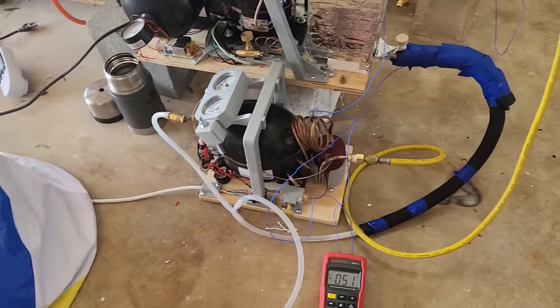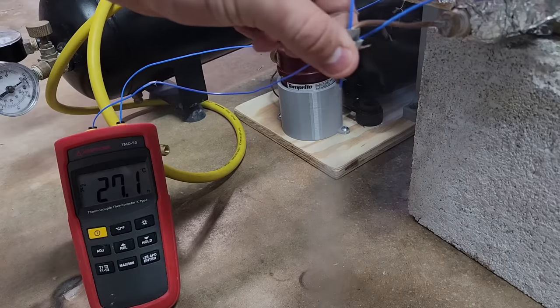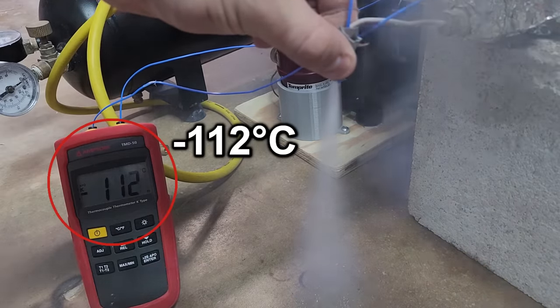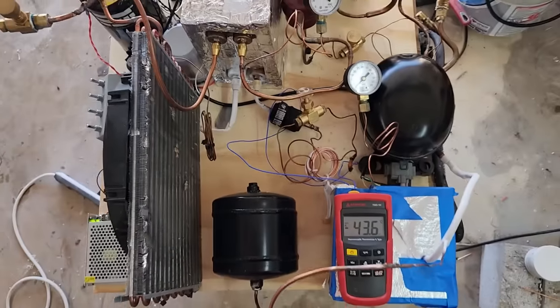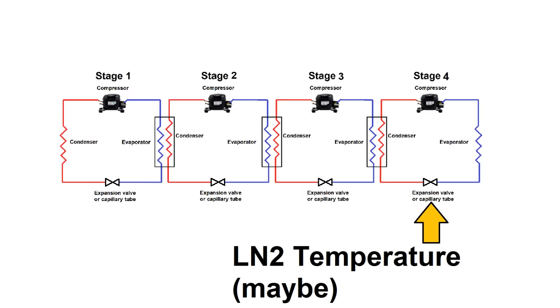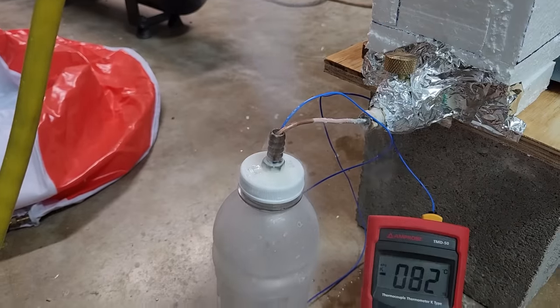In this video, I'm going to improve on my cascade refrigeration system from last time and reach a minimum temperature of minus 112°C. In my last video, I demonstrated how cascade refrigeration works and how it can potentially be used to reach cryogenic temperatures if implemented right. However, I wasn't very satisfied with the results of that video.